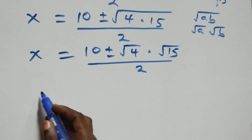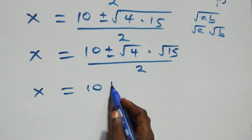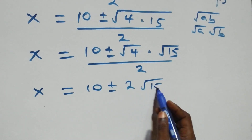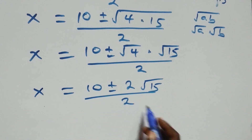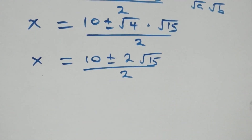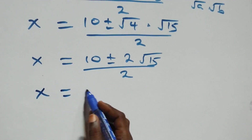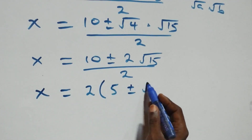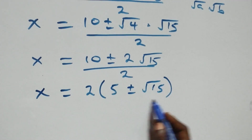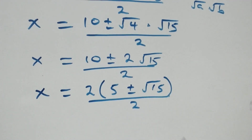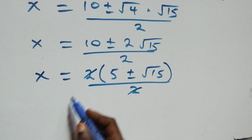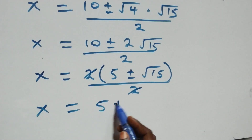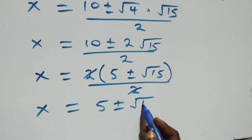So x equals to ten plus or minus square root of four — that's two — times root fifteen, all over two. And also here, two is common. When we factor it out, we have x equals to two into brackets five plus or minus root fifteen, all over two. The two cancels, giving us x equals to five plus or minus root fifteen.